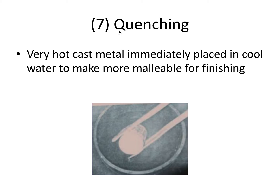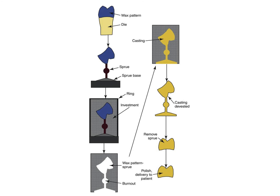Step seven is called quenching. The very hot cast metal is immediately placed in cool water to make it more malleable for finishing. This involves removing the sprue, polishing, and finally delivering the crown to the patient. This summary slide clearly labels all portions of the process: we started with a wax pattern on the die, added the sprue, covered it with investment material, melted out the wax and sprue, poured in cast metal, broke open the investment, and removed the sprue, polished the crown, and delivered it.